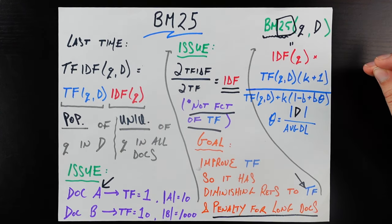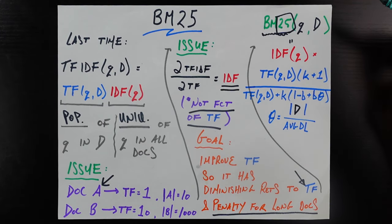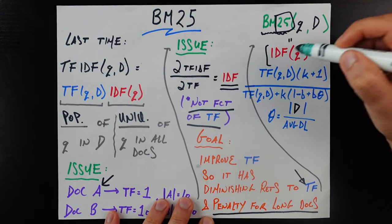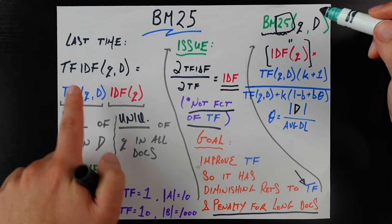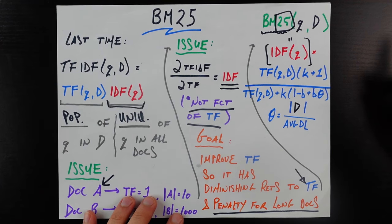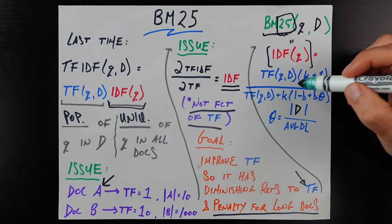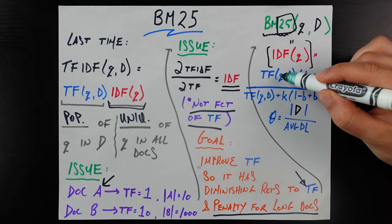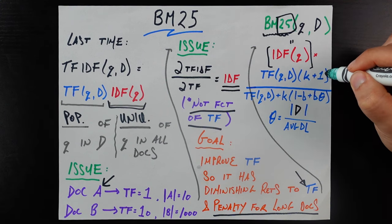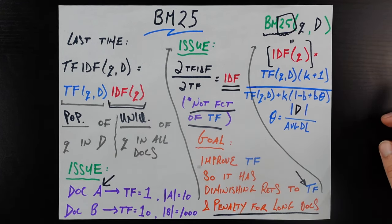What we really care about is how changing certain things in BM25 will change the overall score, and most importantly whether it solves the two issues we had with TF-IDF. So this is the form of BM25. The first part does not change at all from TF-IDF — it's the same IDF of the query. BM25, just like TF-IDF, is a function of the query and some document we're trying to score. It's the TF part where we do a lot more engineering. The numerator is the same term frequency of this query in this document, multiplied by (k + 1). The k here is a free parameter that whoever is engineering the search engine can change to fine-tune the ranking.